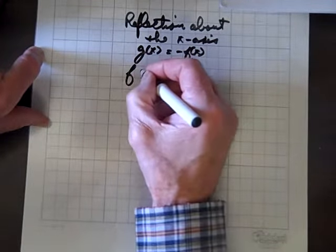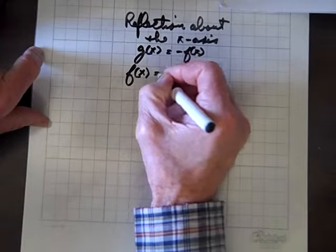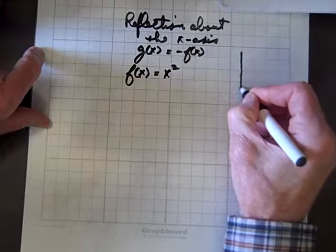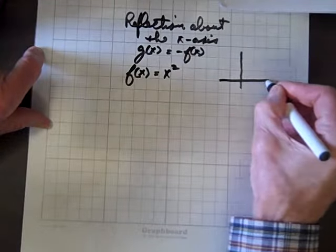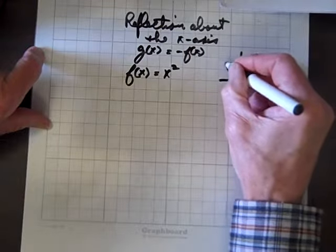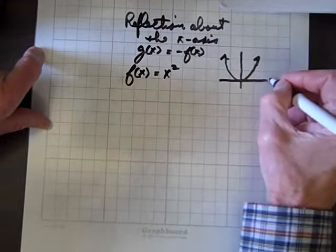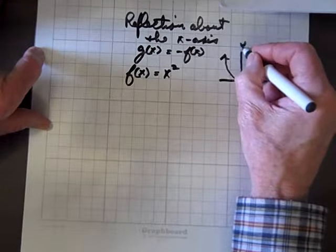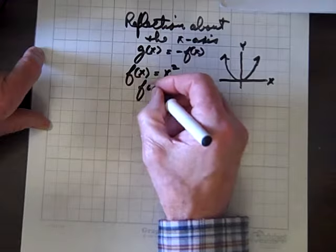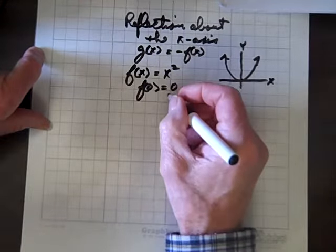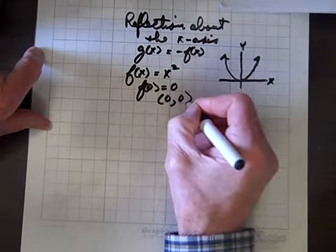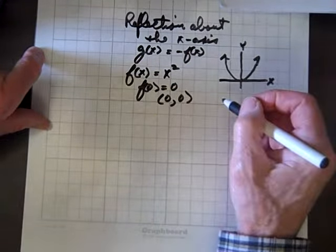So let's let f of x equal x squared. And we know the graph of f of x is a parabola whose vertex is at the origin. The x and y-intercepts both occur at the origin. And we know that f of 0 equals 0. So when x is 0, y is 0, those are the coordinates of the origin.